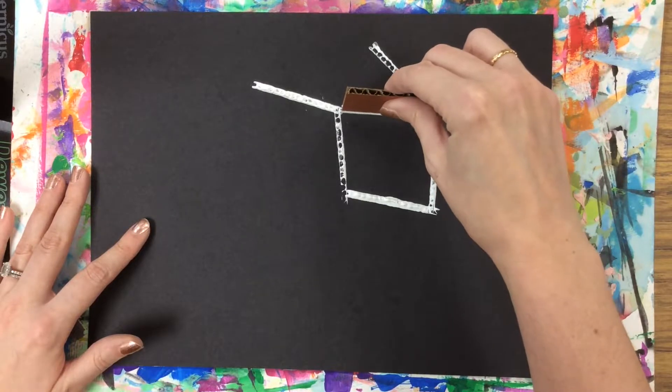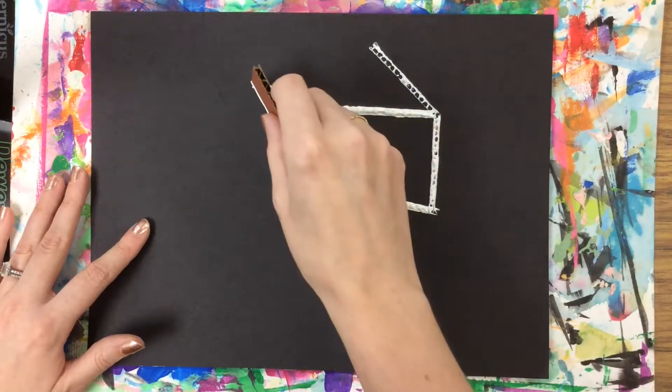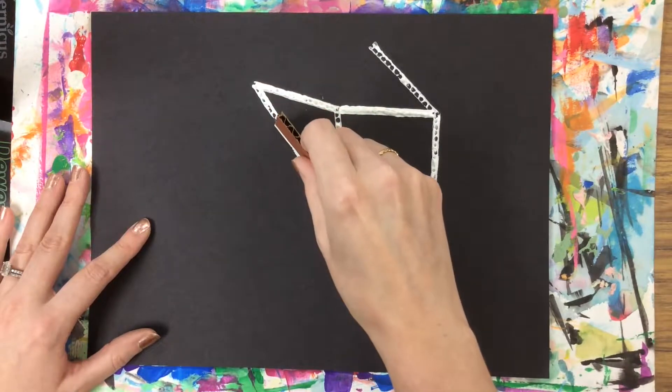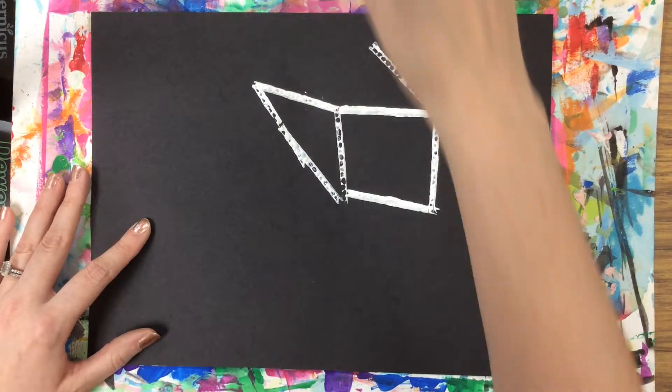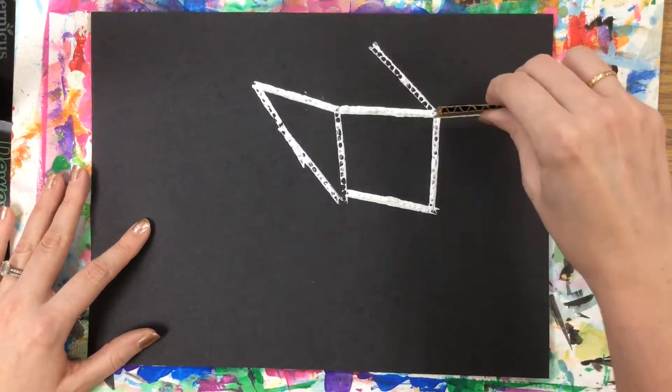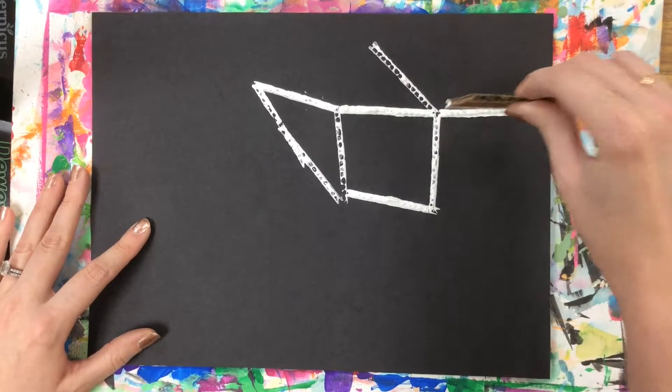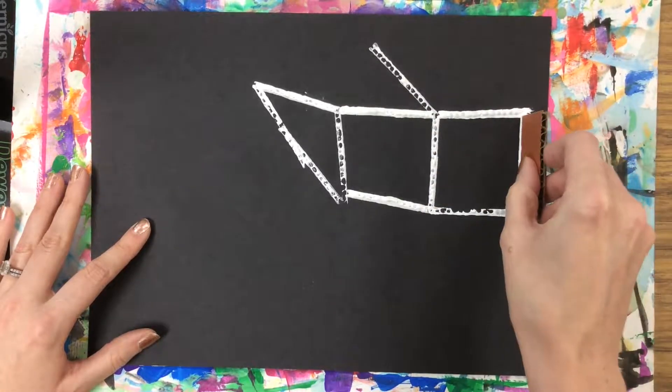So, maybe I close this right here. Maybe I go this way and make a triangle, one, two, three sides. Maybe I try to make a square on this edge by going one, two, three, four.